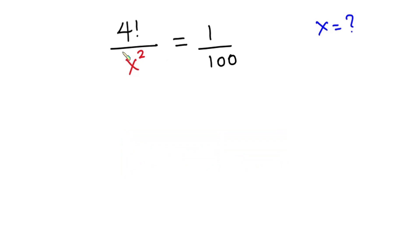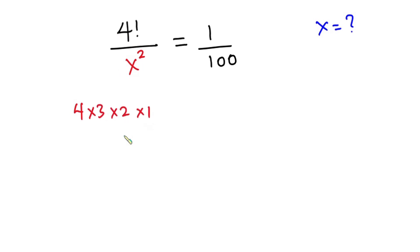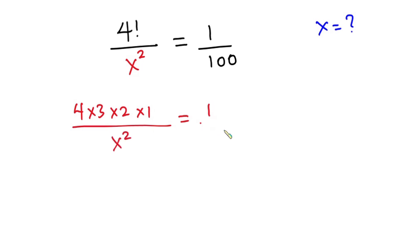Now let's get started. 4 factorial is the same as 4 times 3 times 2 times 1, and this is divided by x squared, then everything is equal to 1 over 100.